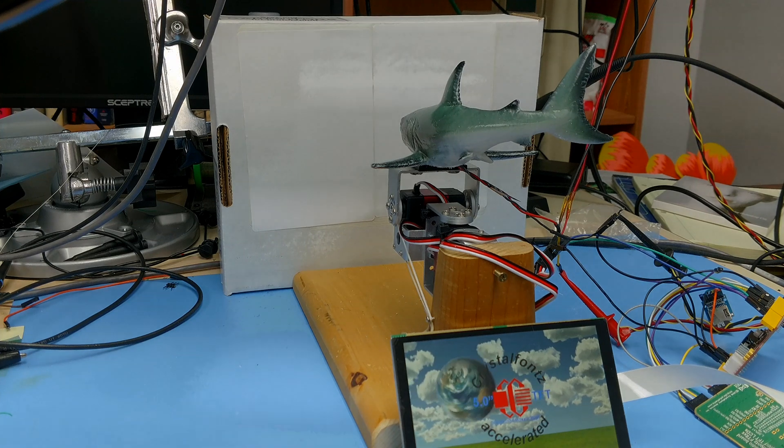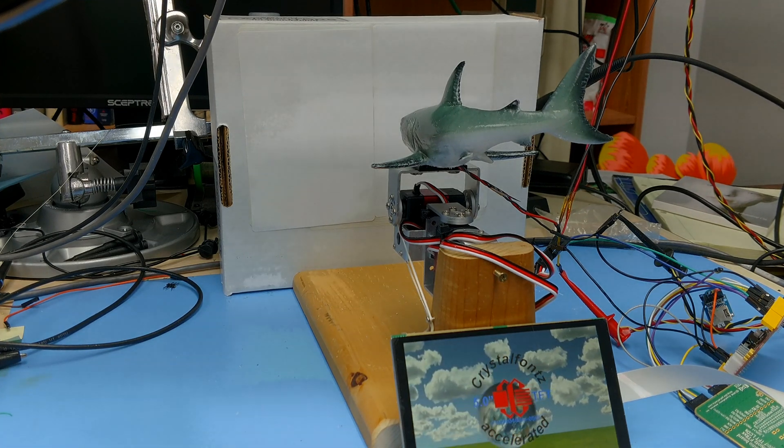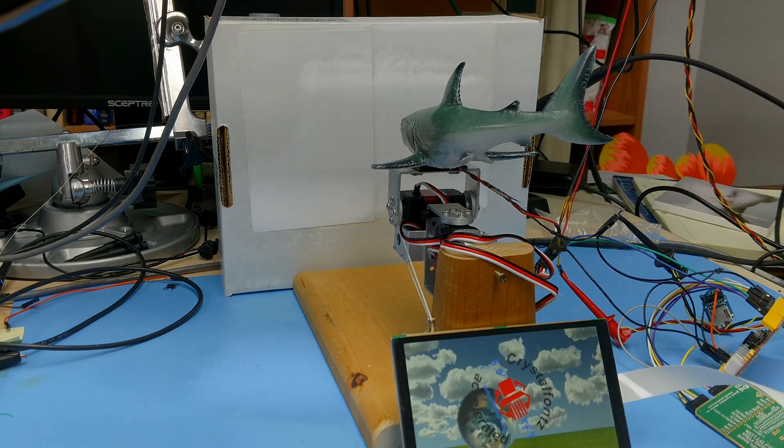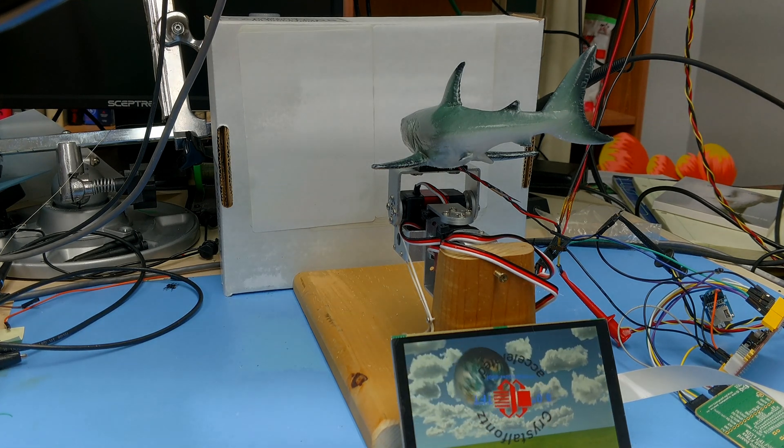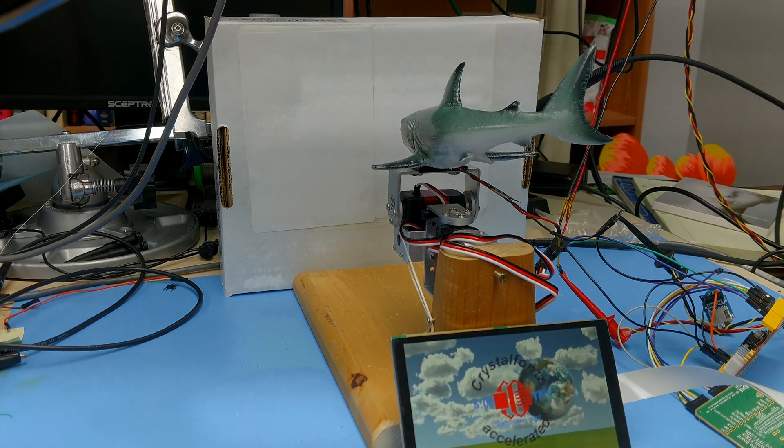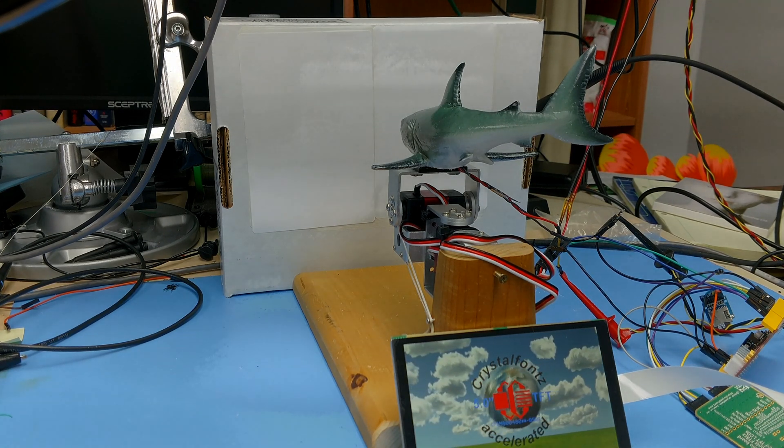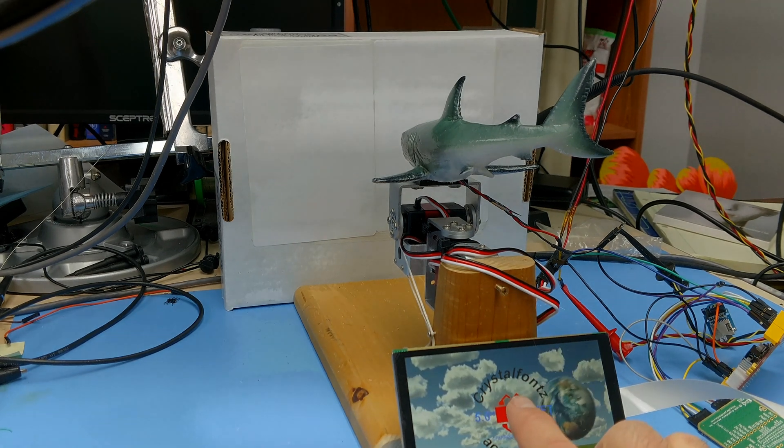We started with demo code that comes with this CrystalFonts 5-inch touch-enabled accelerated TFT. It just kind of bounces things around, but it does detect the touch. I'll go over the code later, but basically when it gets a touch, it slews the servos to that point and turns the laser on.